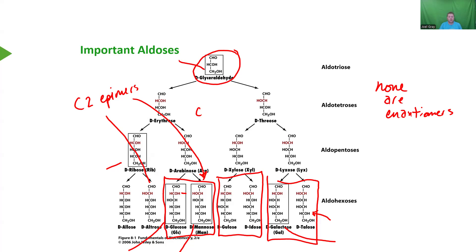We also talked about a lot of terminology last class period: enantiomers, diastereomers, and epimers. What makes something an epimer but not a diastereomer? What makes something an enantiomer but not an epimer? So distinguishing between those terms is important.